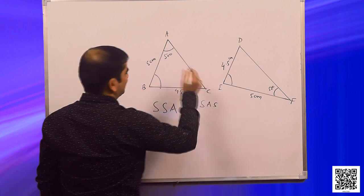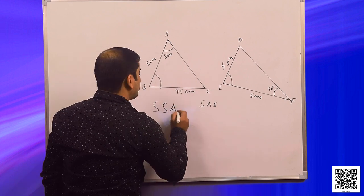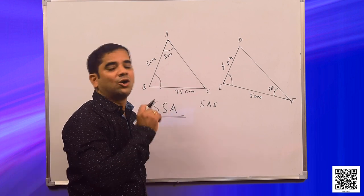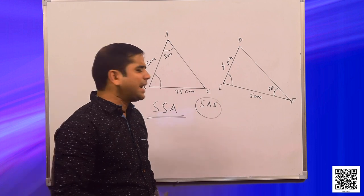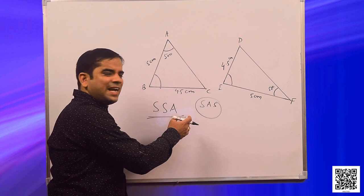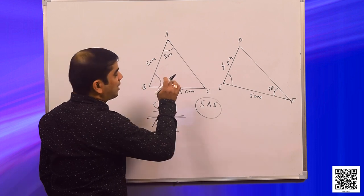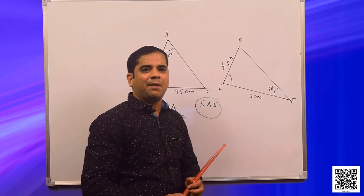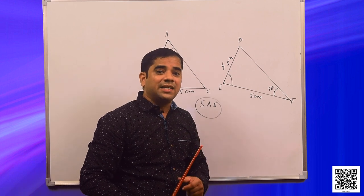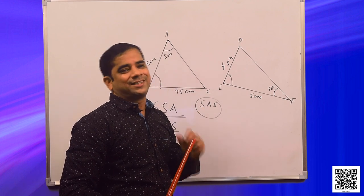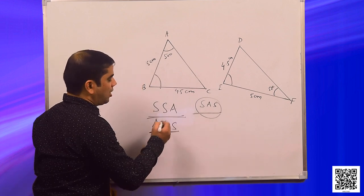Triangles are congruent only in the case of SAS. SSA can also be written as ASS — one angle and two sides equal, but the angle is not included. So when two triangles have two equal sides and one equal angle, they will be congruent if and only if that angle is the included angle of the two equal sides. Only SAS congruency is satisfied, not SSA or ASS.